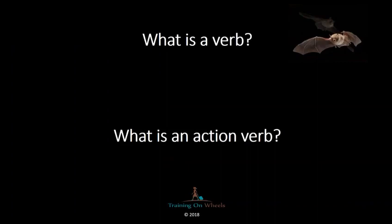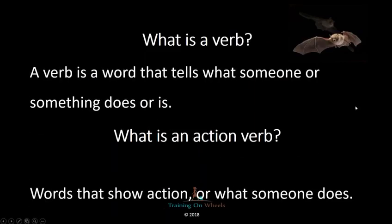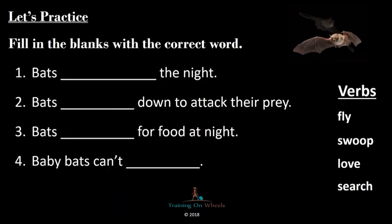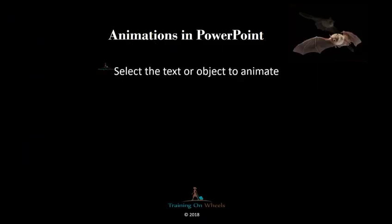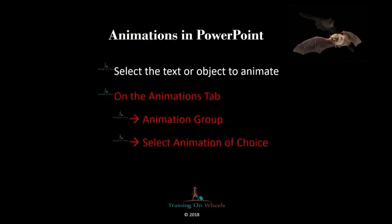Now that we have successfully completed our slide by inserting a shape as well as animating that shape, we're going to show you just a few slides here of different ways that you can use the animation feature. This one is pretty cool — it will allow students to fill in the blanks with the correct words. Same concept, this time we're inserting a text box and then animating. And as we recap the steps of utilizing animations in PowerPoint: select the text or object to animate, on the Animations tab go to the left in the Animation group and select the animation of your choice, and then we make magic happen.